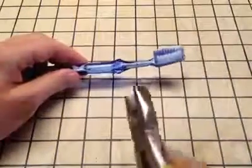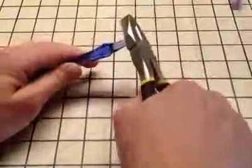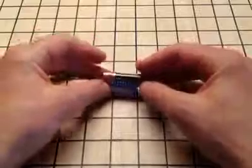Use your cutters to snip the head off your toothbrush. Take your AAA battery, put it on top of your brush head, and tape it on like this.